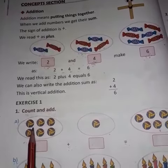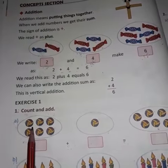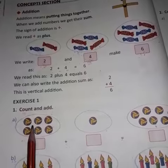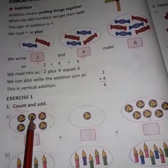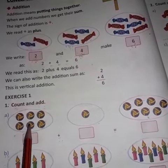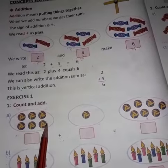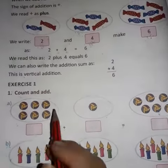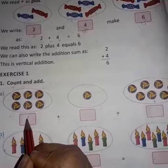You have to add this ball and you have to write in this box. Now let's count. One, two, three, four, five, six. Here are six balls. So you have to write six here, okay?